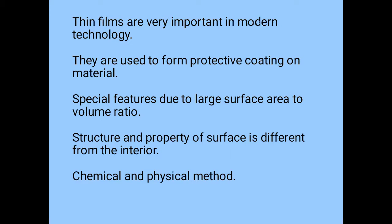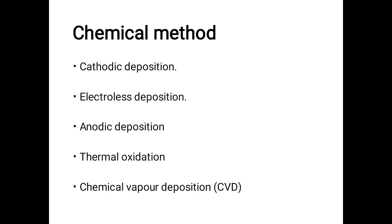One more thing — the structure and property of the surface is different from that of the interior. That means the property of the surface of a thin film is different from that of the interior part. There are many methods to prepare thin films, and those methods fall under two main groups: chemical methods and physical methods.